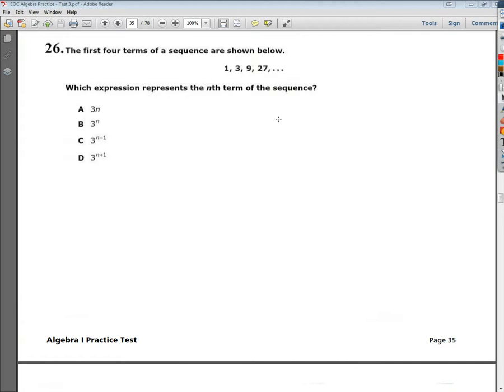Now when it says nth term of sequence, if you don't know, that's the generic form. So I could take that form, that term, and I could plug in any number in the sequence that I want, and I could find its value.